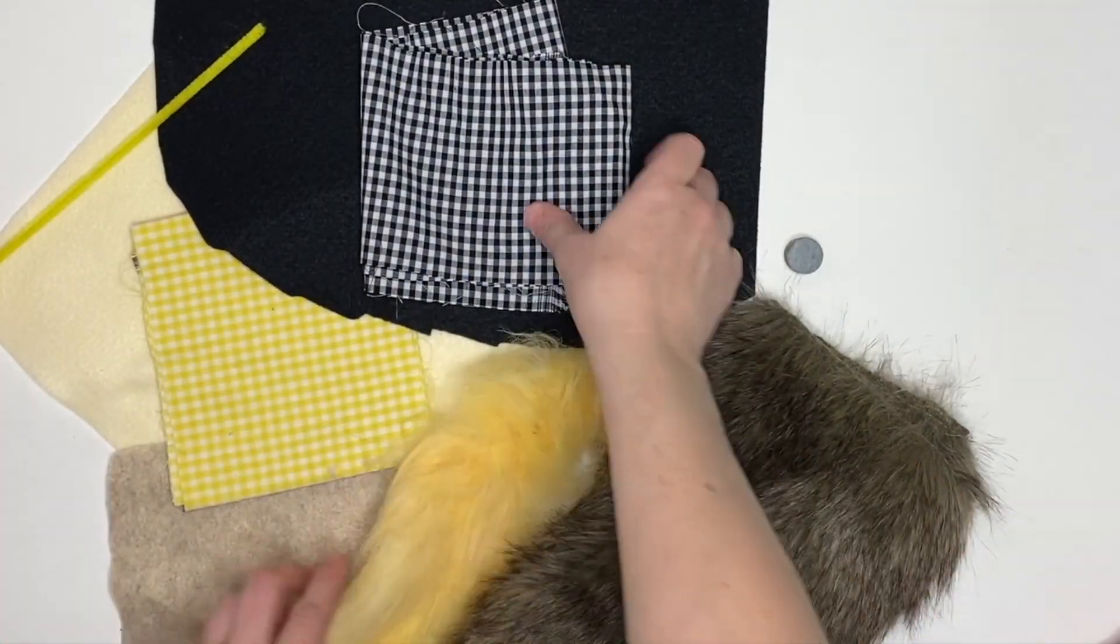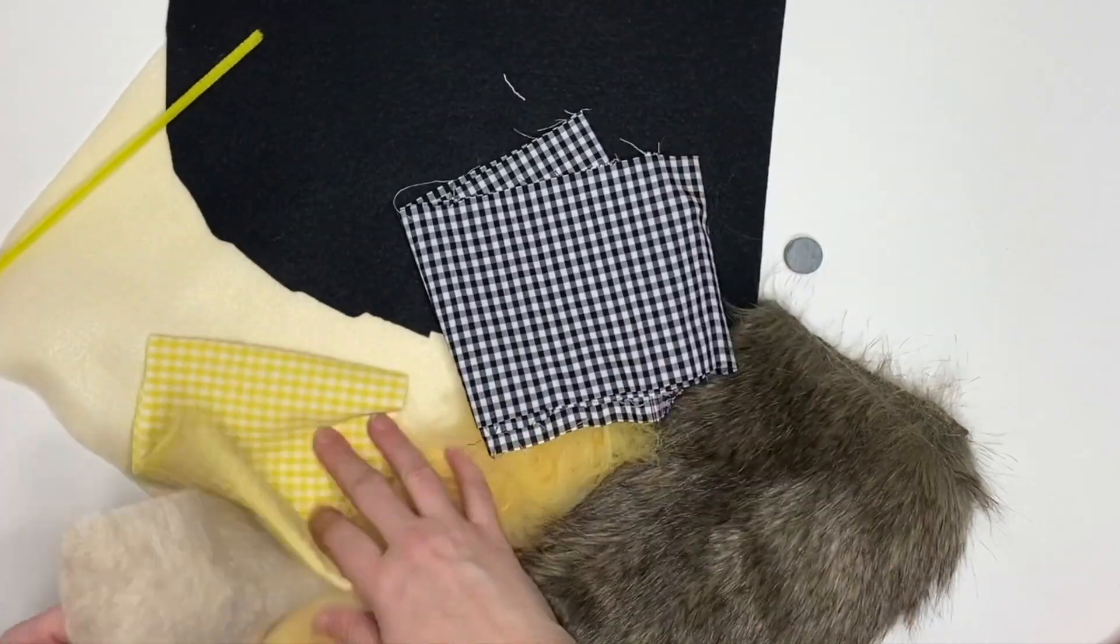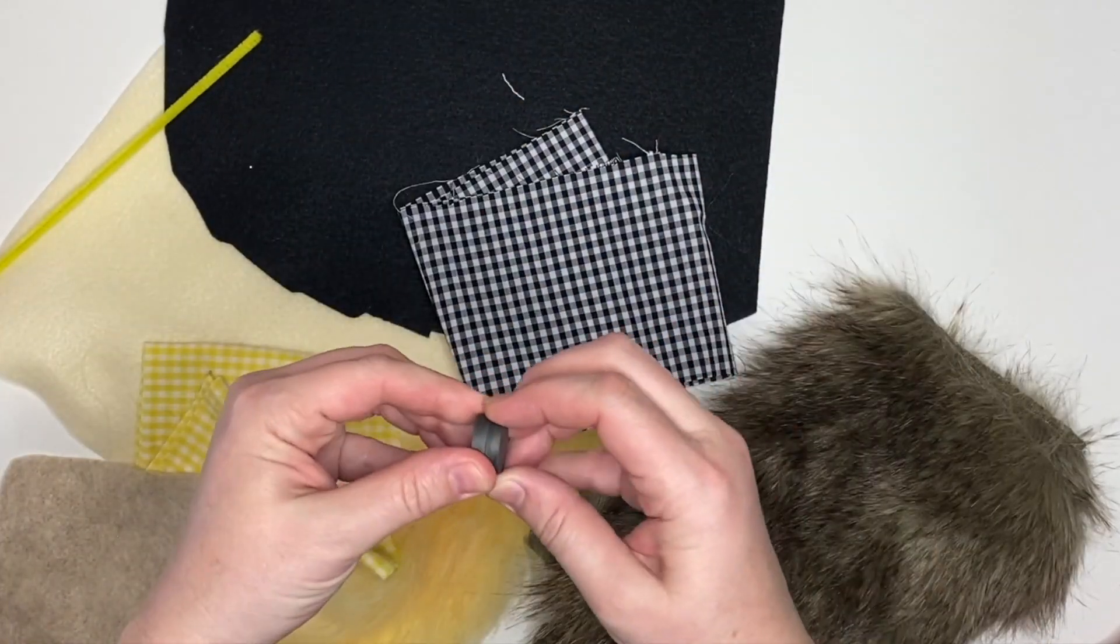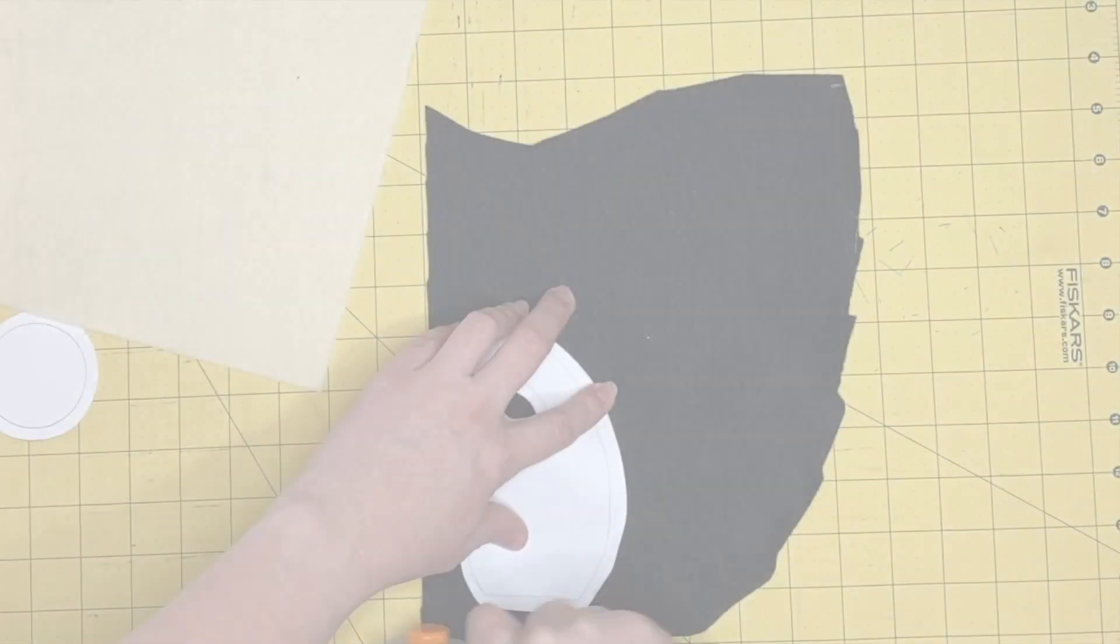Alright, to get started we're going to be using faux fur, some cotton fabrics, felt fabrics, nude color for our noses in felt, and these very strong magnets.